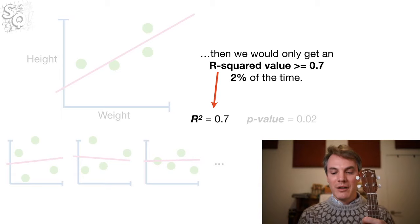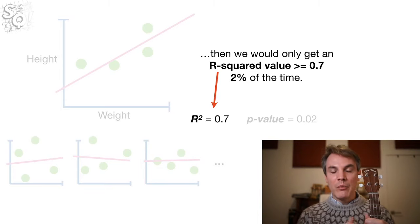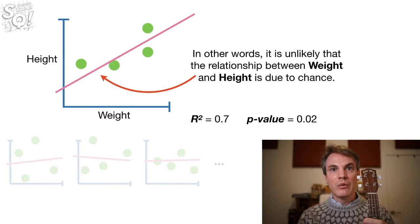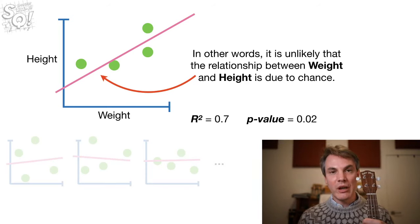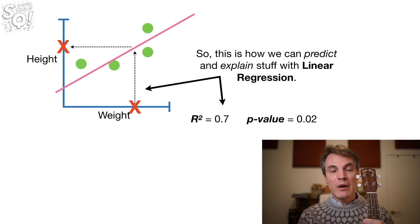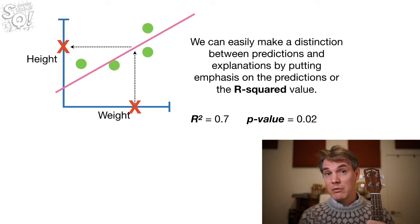So remember, we had some random data sets, and we calculated R-squared values for all those random data sets. And if we did that, then we would only get an R-squared value greater than or equal to 0.7 2% of the time. That's what that p-value is telling us. So in other words, it's unlikely that the relationship between weight and height is due to chance. And even though correlation, in this case measured by R-squared, is not causation, we still have some insight into our data. So this is how we can predict and explain stuff with linear regression. And we can easily make the distinction between predictions and explanations by putting emphasis on the fact that we've made a prediction, or we can put emphasis on the R-squared value, where an R-squared is used more for explaining stuff and trying to tease out relationships in the data.